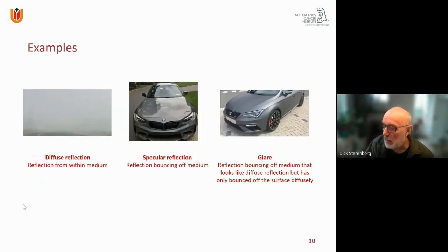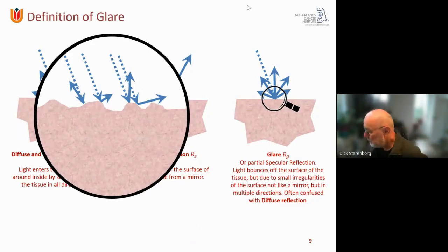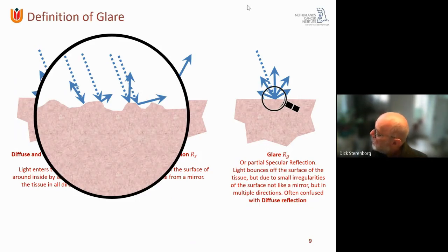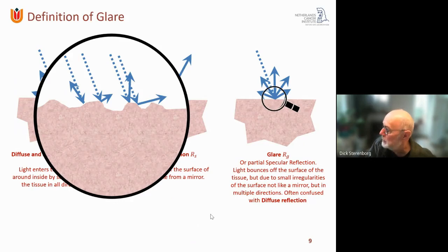Glare is often confused with diffuse reflection because diffuse reflection comes from within the tissue. Ray tracing programs used in computer graphics treat diffuse reflections as coming from the surface — there's never any tissue transparency modeled. That's why artificially generated computer images always look slightly different from real life — apparently they work in their own little bubble.